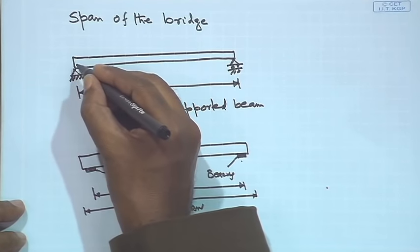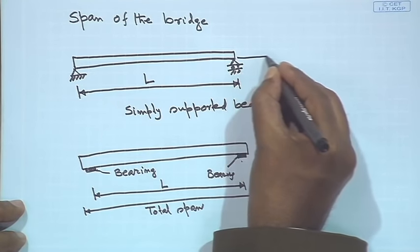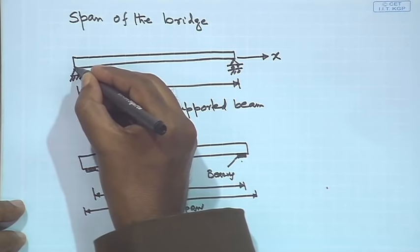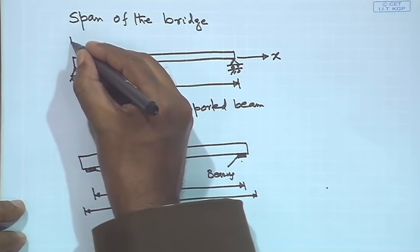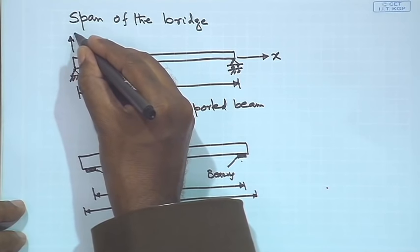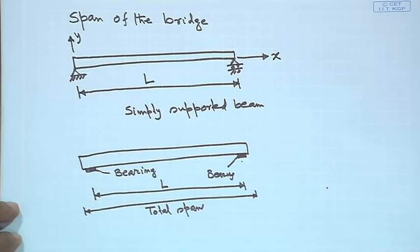We now have two different spans: one is the effective span and another is the total span — the total length of the bridge. In terms of axes, the vehicle moves along the x-axis. The z-axis gives the width, and the y-axis is vertical. It is customary to write down z as vertical.